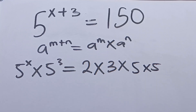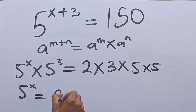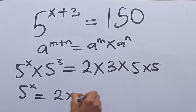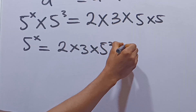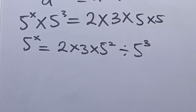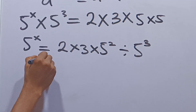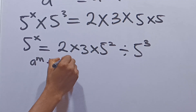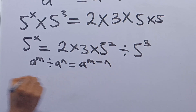From here we have 5 raised to the power x to be equal to 2 multiplied by 3 multiplied by 5 squared, divided by 5 to the power of 3. Recall the law of indices that states that a raised to the power m divided by a raised to the power n is equal to a raised to the power m minus n.